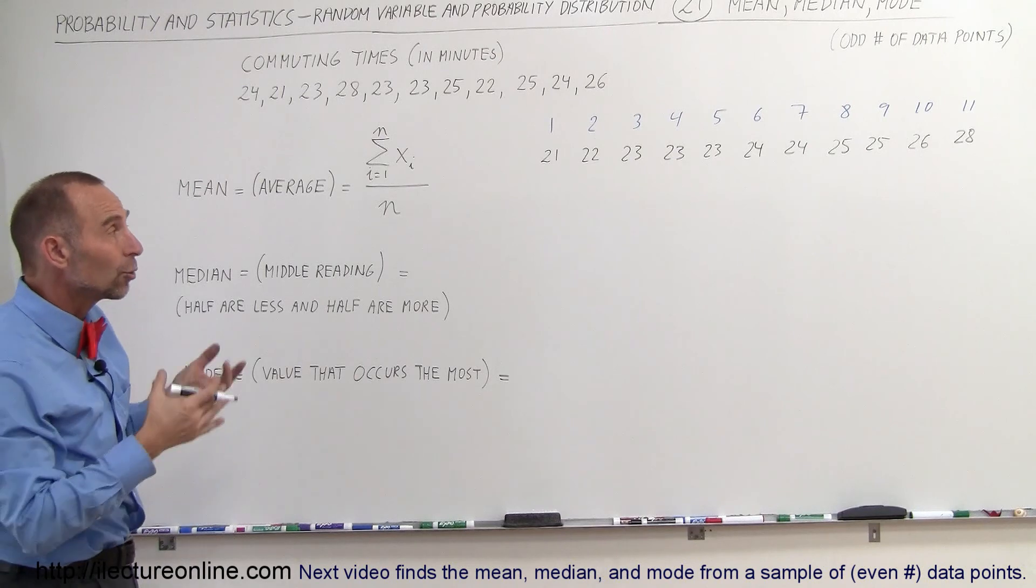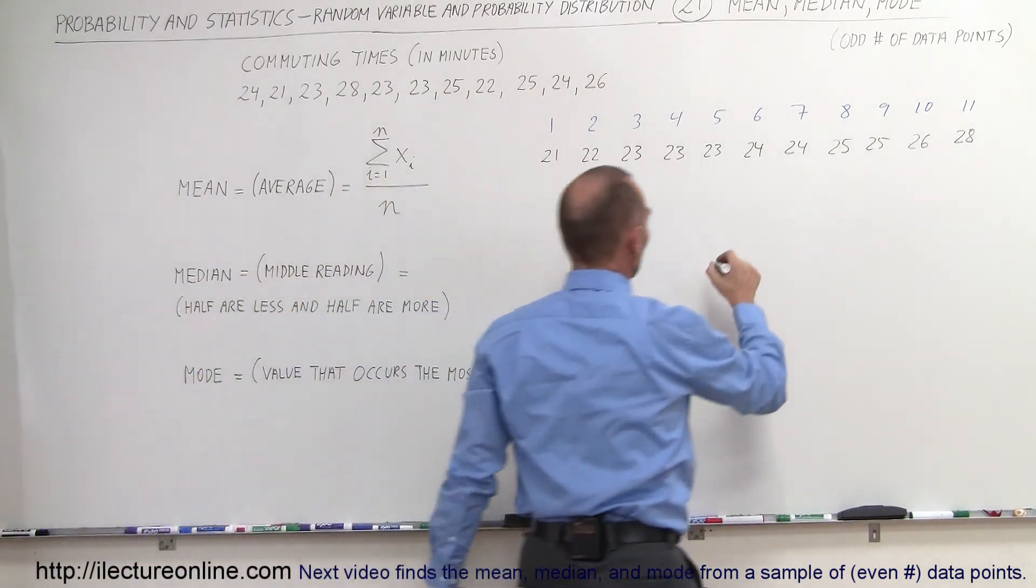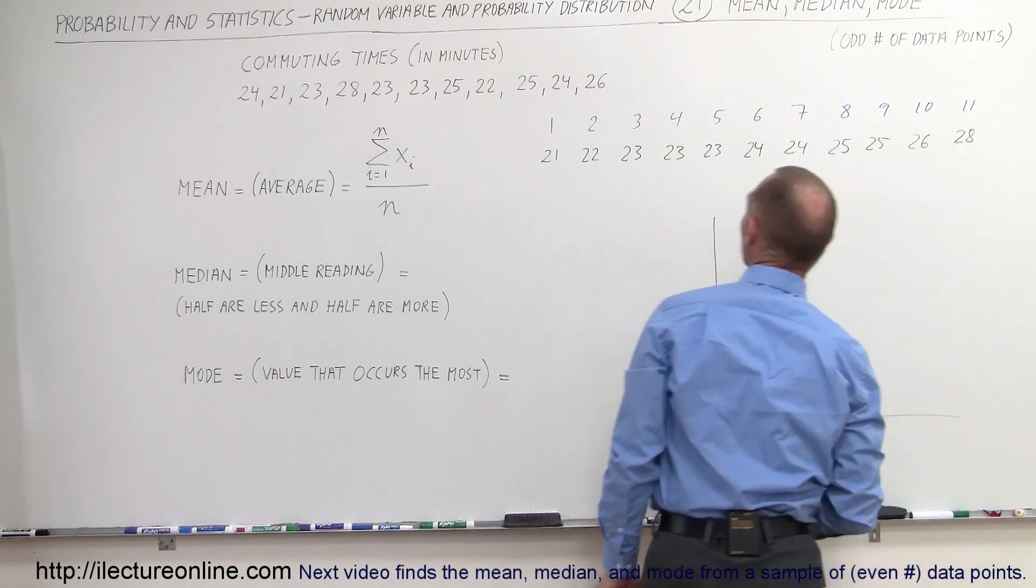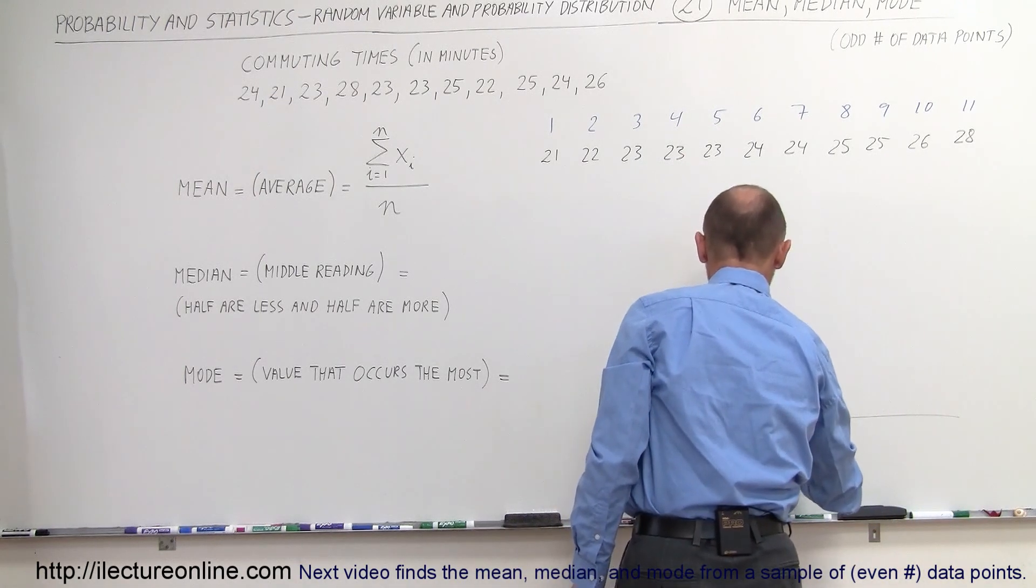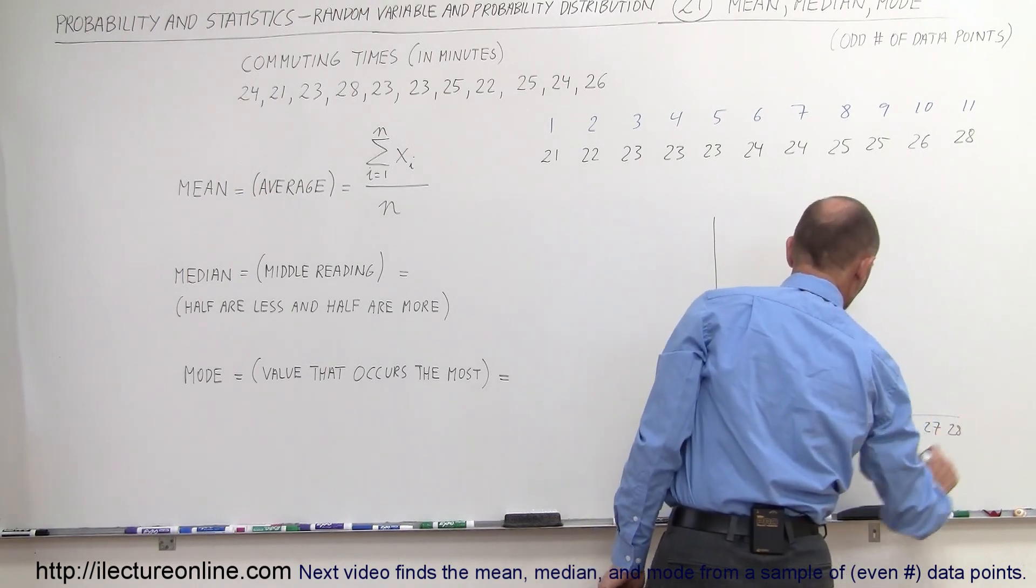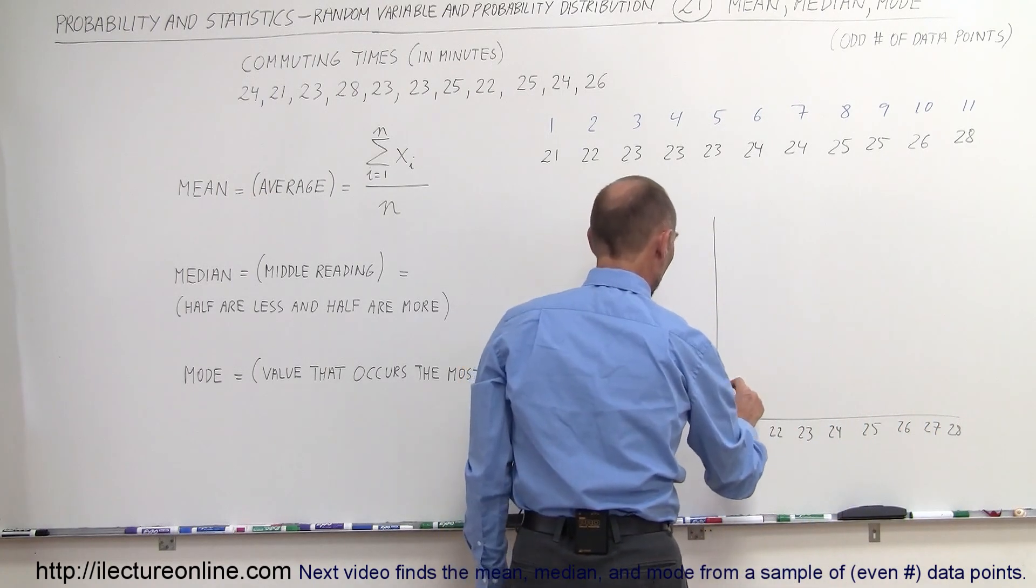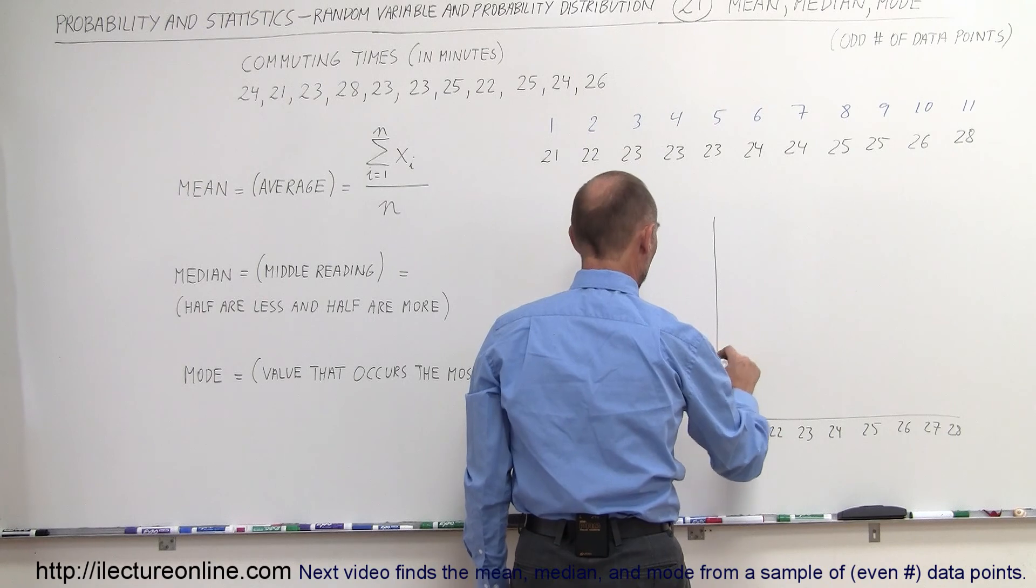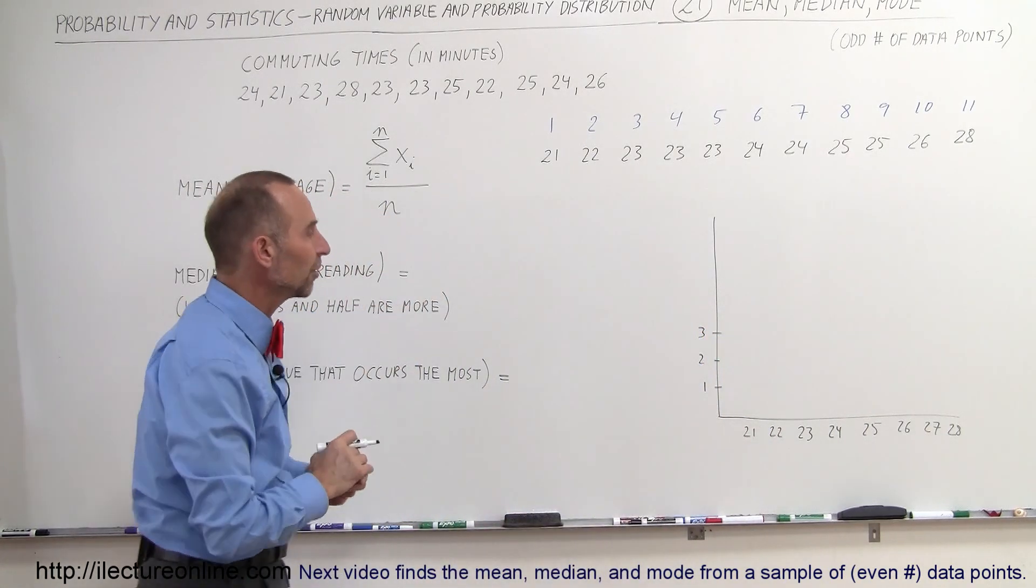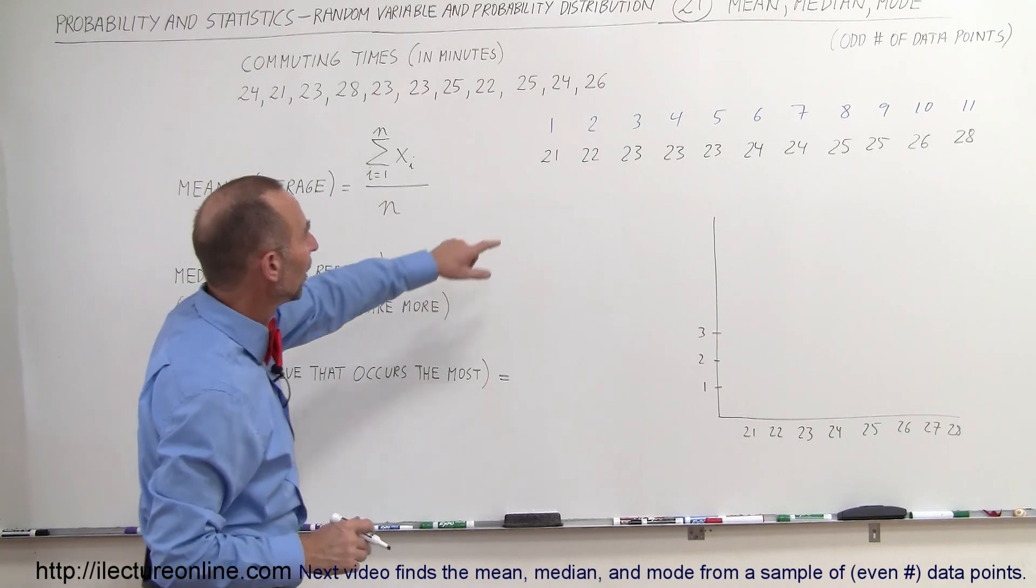One thing that I can do is I can graph them on a histogram, which shows you how many times each one occurs, and I'll use bars to do that. So I'll use the number 21, 22, 27, 28, like that, and then occurrence of one, occurrence of two, and occurrence of three. And I'll draw little bars representing how many times each number occurs.